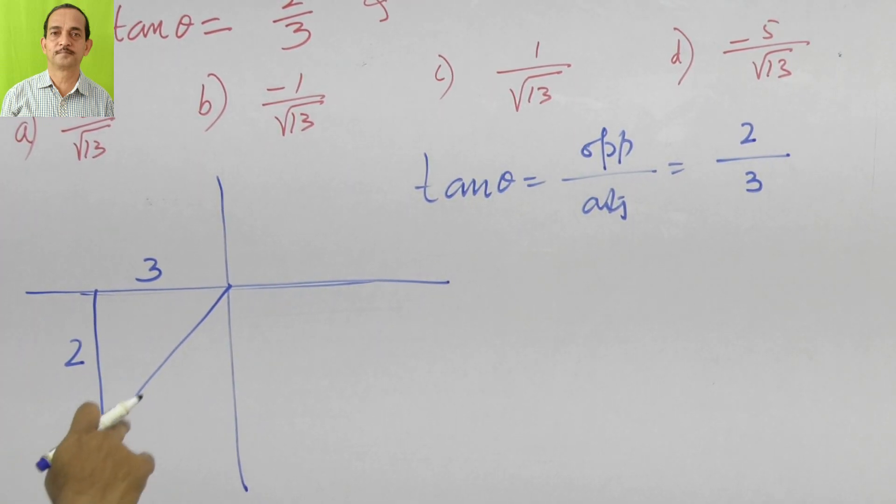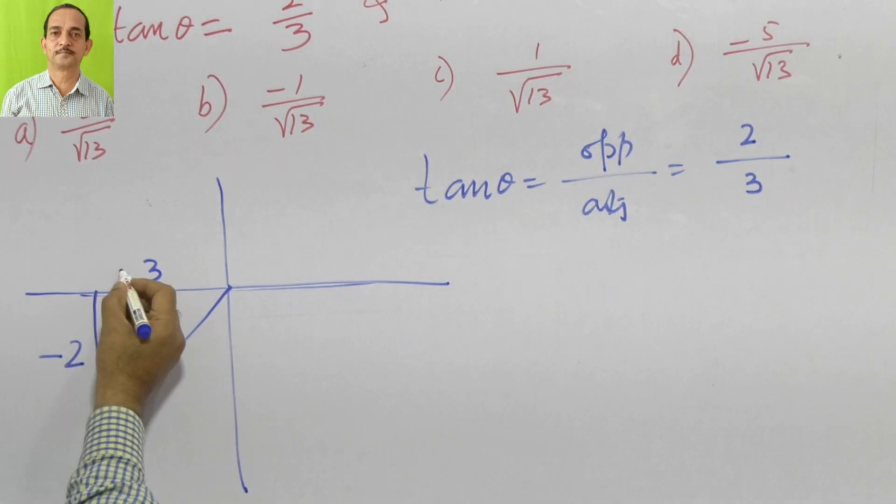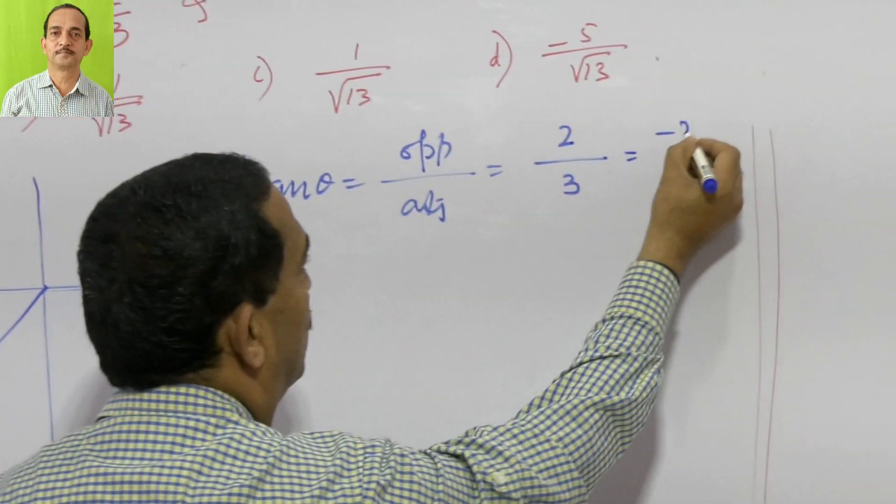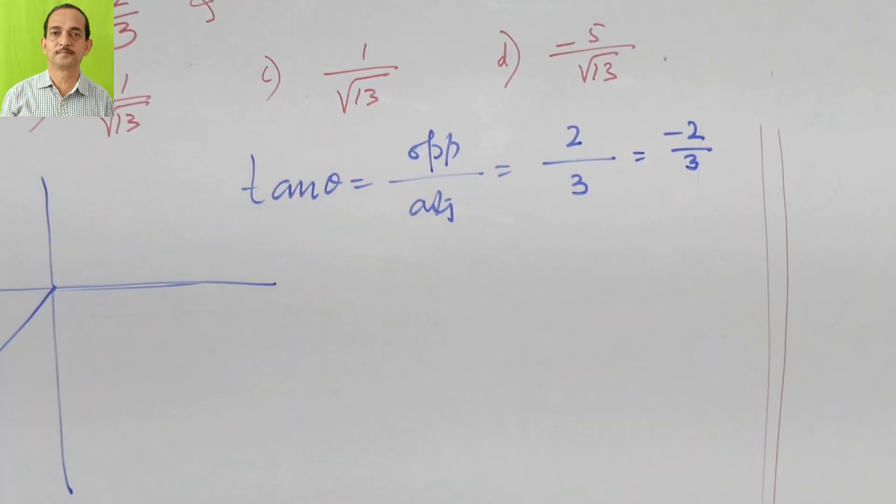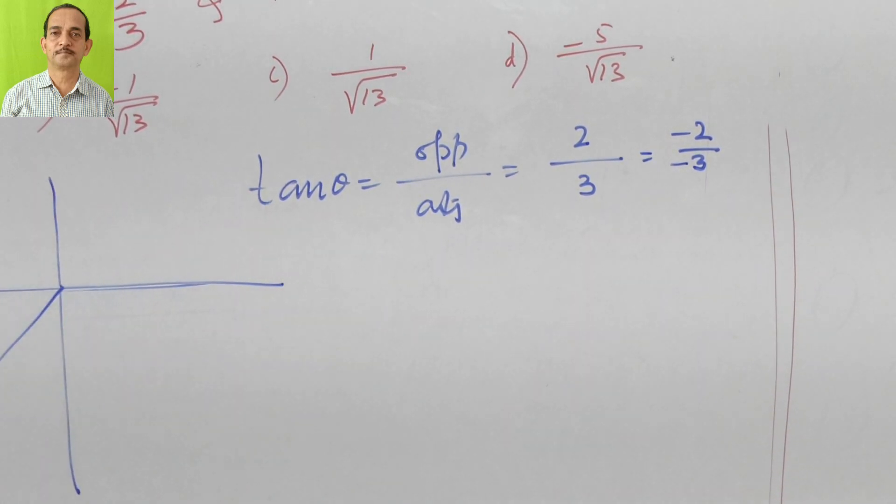Since this is in the third quadrant, in the third quadrant the y-axis is negative and x-axis is also negative. Actually, this value is minus 2 by 3. So minus 2 by minus 3, not plus 3. That is very important.